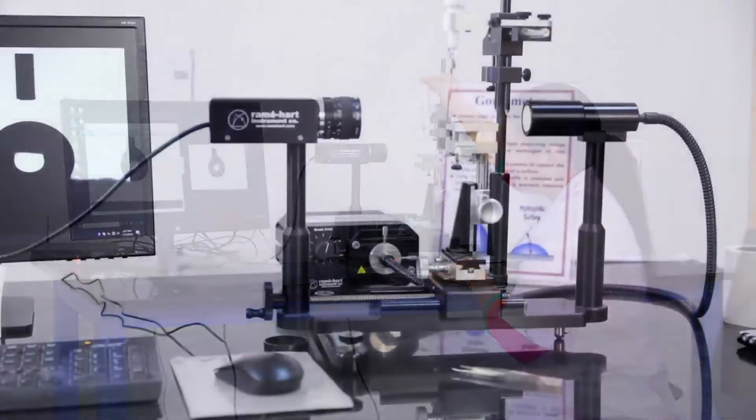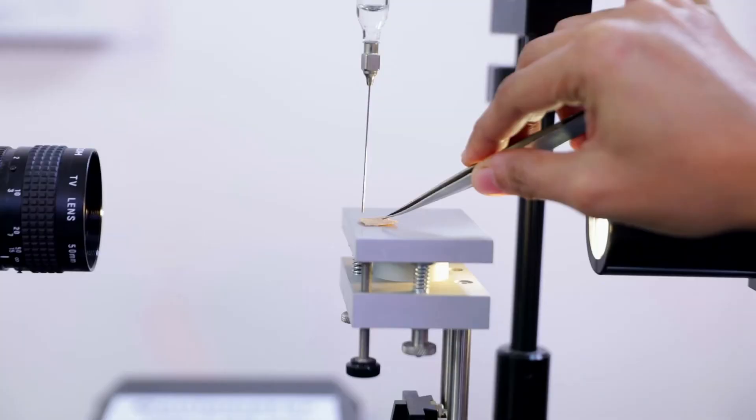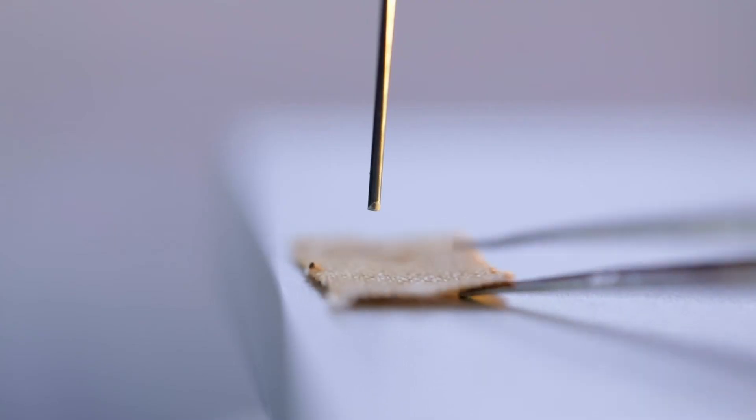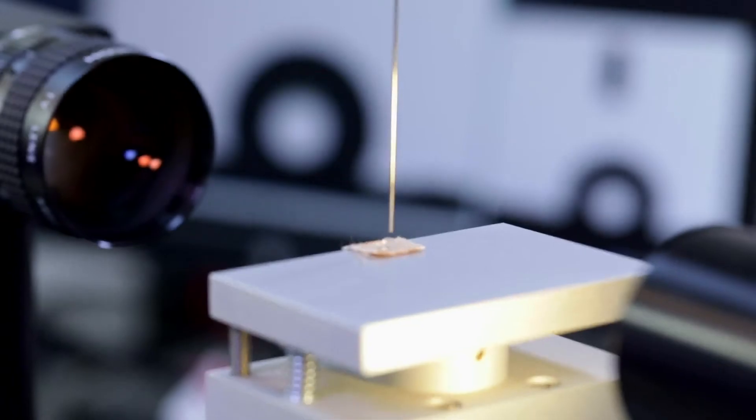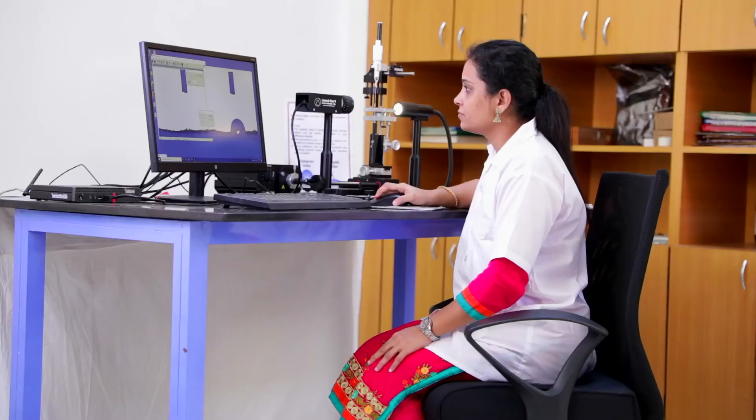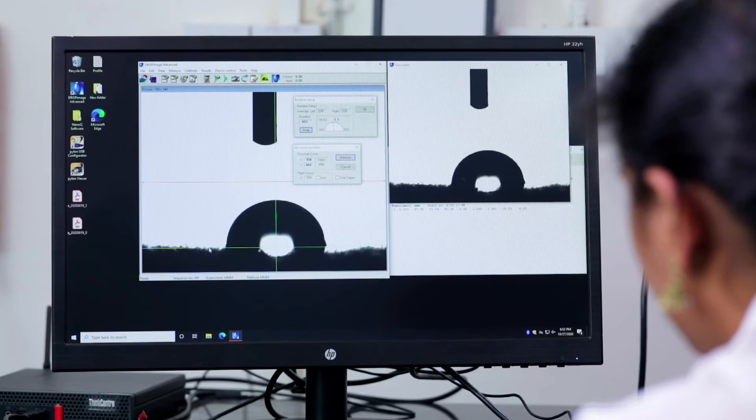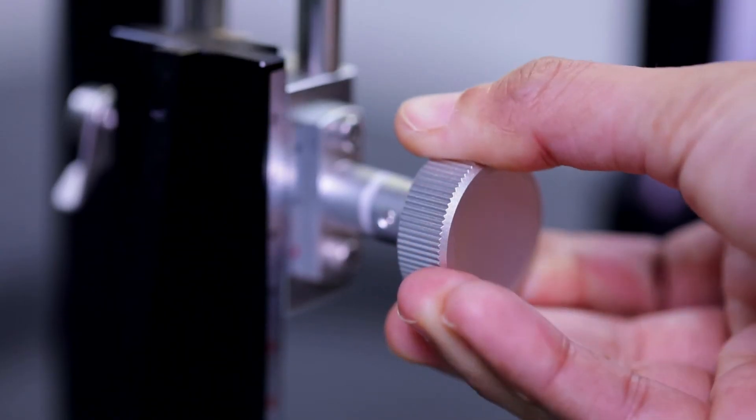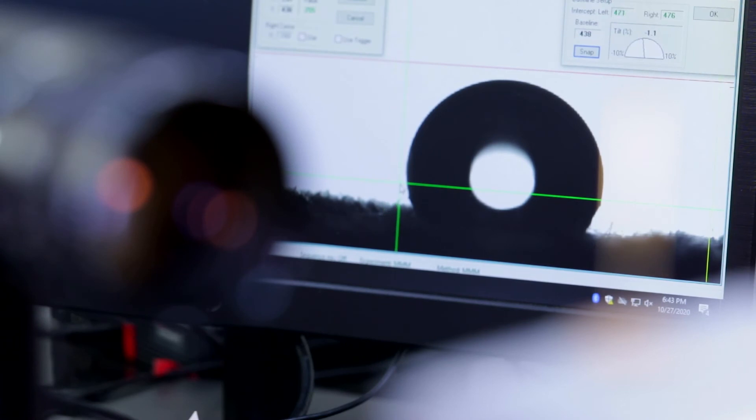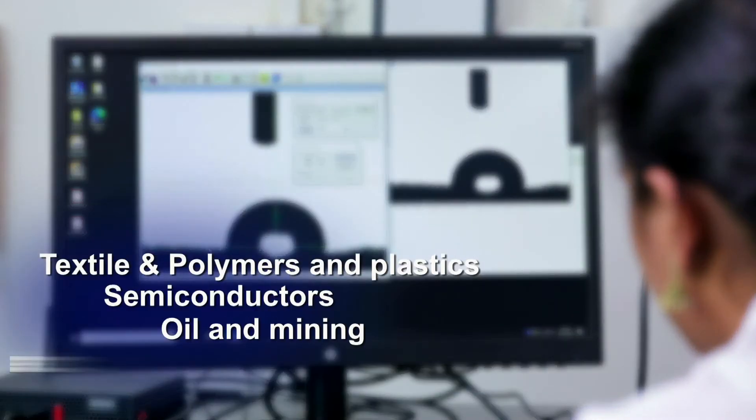The main purpose of a goniometer is to analyze the wetting properties of a surface when a drop of liquid meets a solid surface. This instrument is used to precisely report and record the interfacial tension, contact angle, surface energy of solids and drop dimensions. These measurements are of great benefit to multiple sectors.